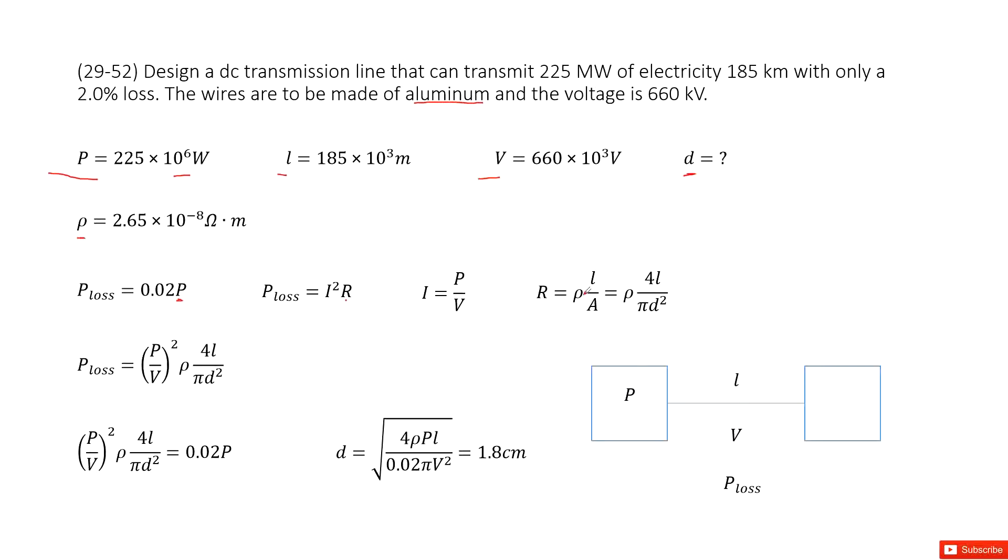So we can use the resistivity, L divided by A. And so replace A as pi R squared. So R is D over 2. So we can write it this way. So there we introduce the diameter there.